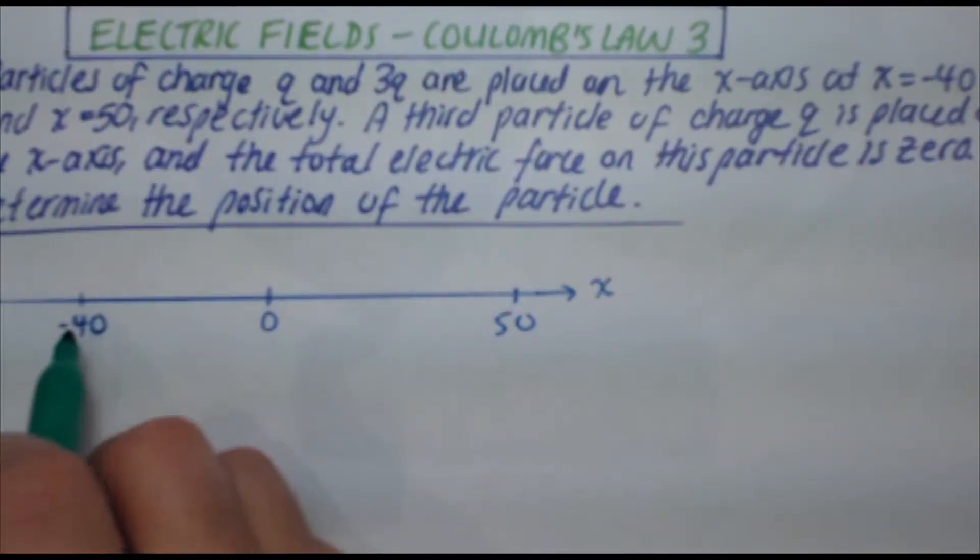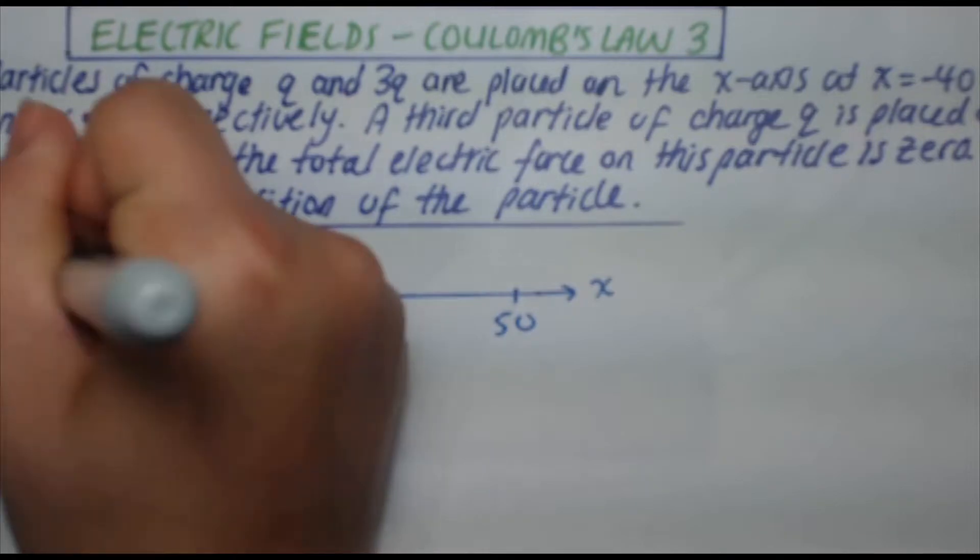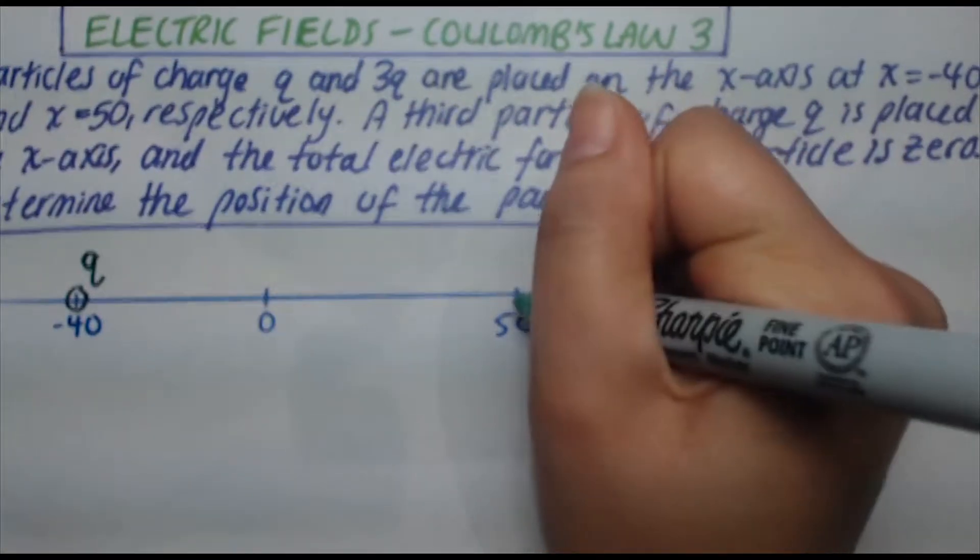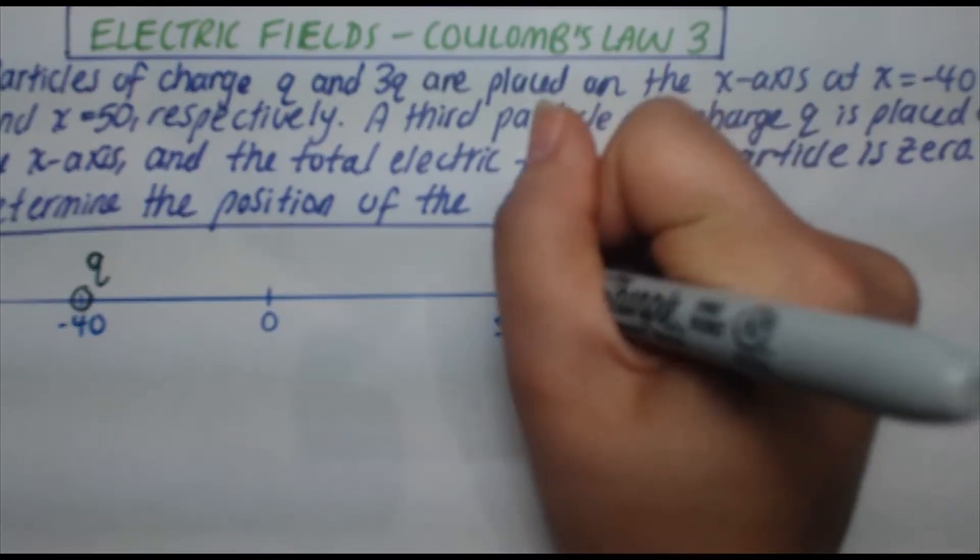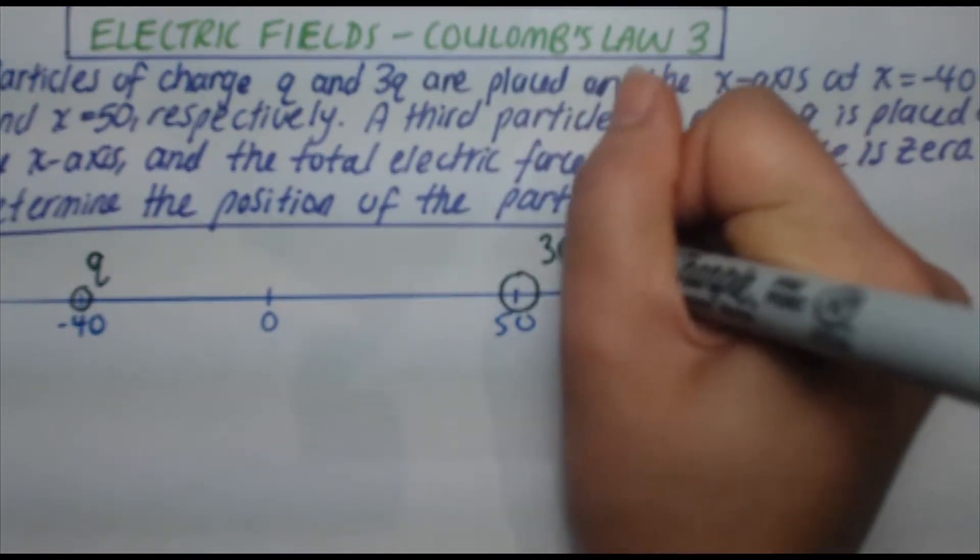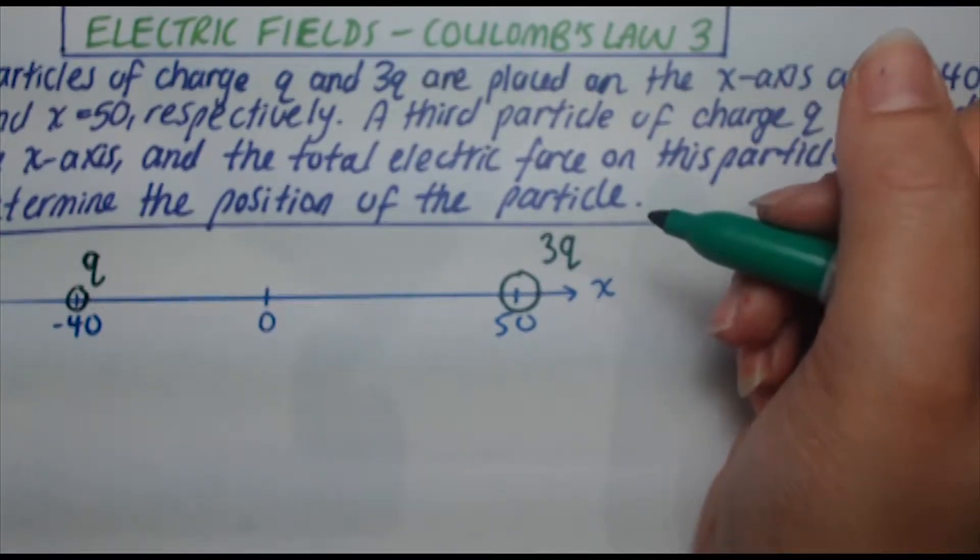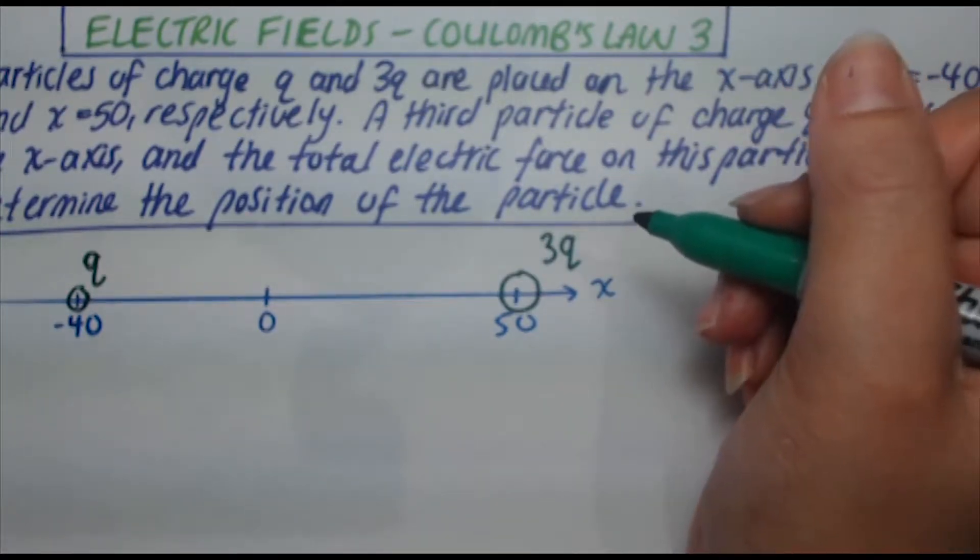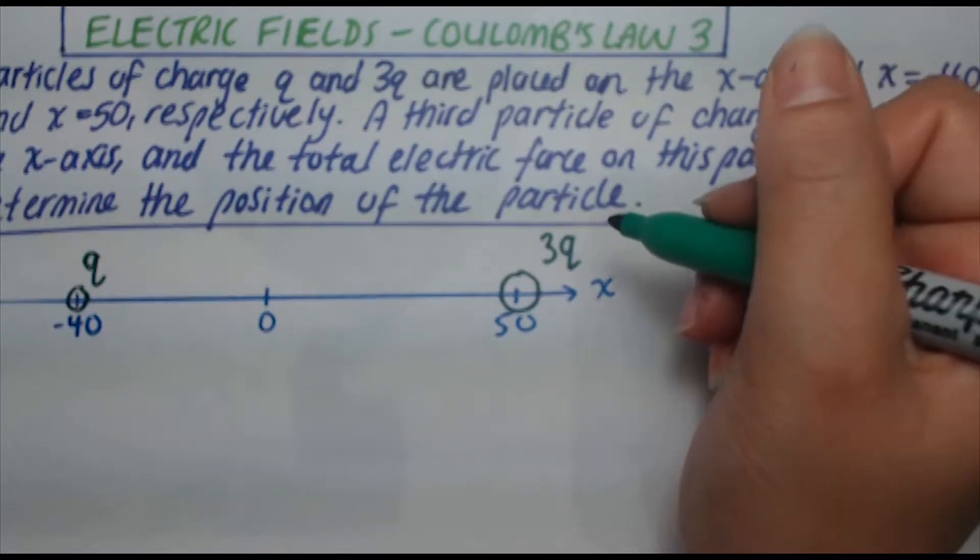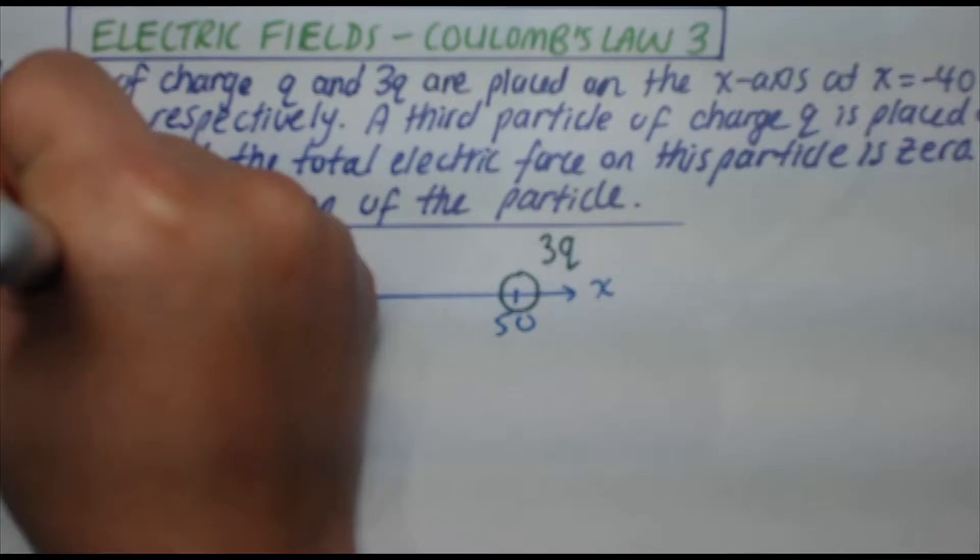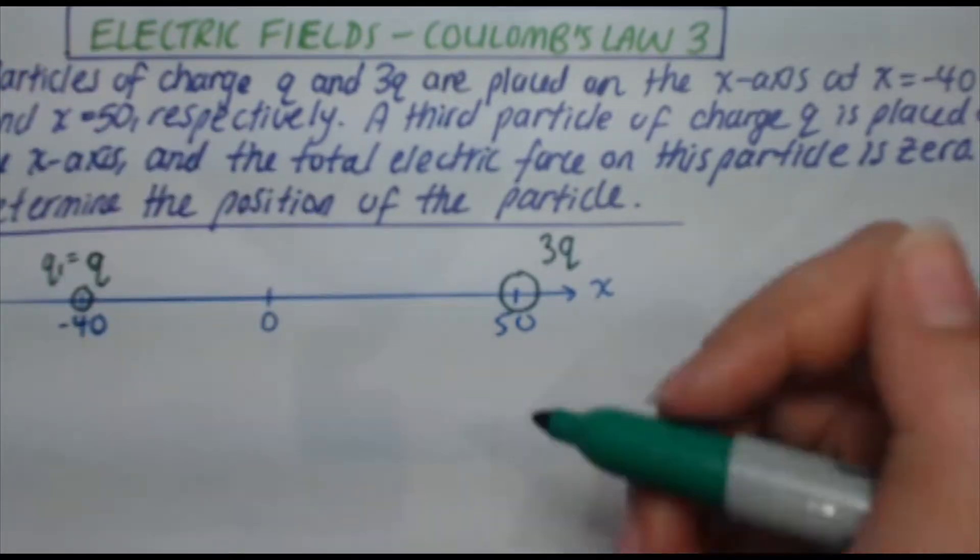So at minus 40 I've got the charge q, and at positive 50 I have the charge 3q. Now I've drawn it bigger to illustrate the idea, but having a bigger charge doesn't necessarily mean it's larger in size, but regardless this is just for effect. We can call this one over here q1, so q1 has a magnitude of q.